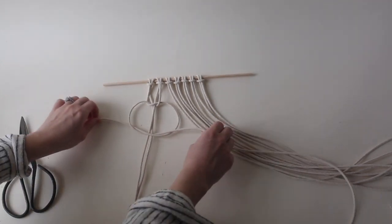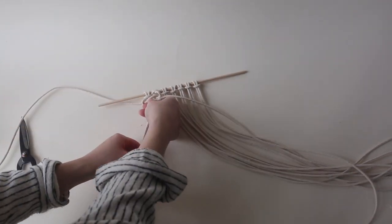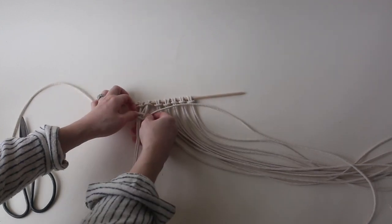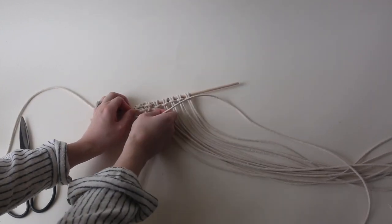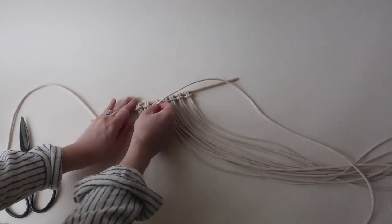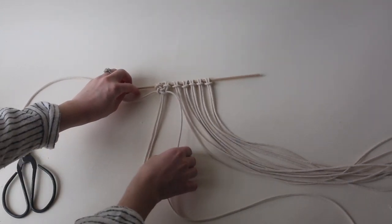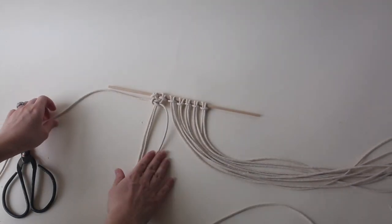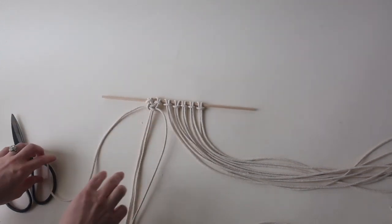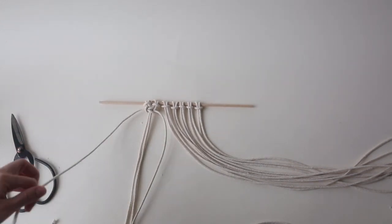Then you're gonna bring this tail up and under all of them through the center of the four, and we're gonna slide those up and pull them nice and tight just like that. So now I'm gonna go ahead and repeat my square knot until it's gone down about two or three inches.